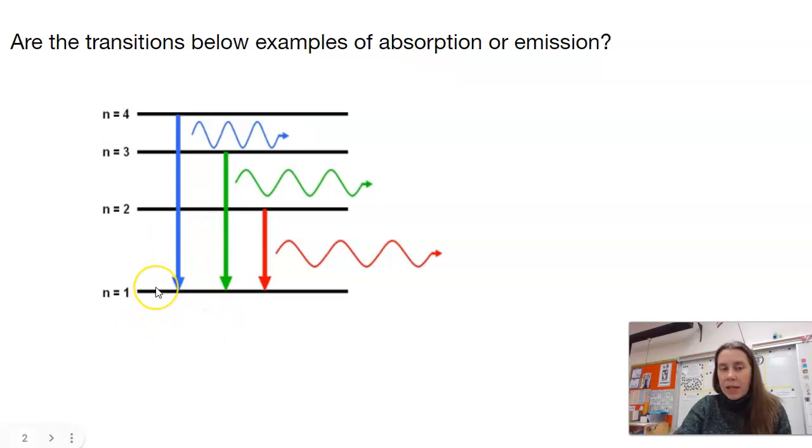If we had an electron down here in the first energy level, that's called the ground state, or the lowest where it can be. If it is hit with either light or heat or electricity, then it can move up to a higher energy level because it absorbs light. So moving from low to high is absorption.